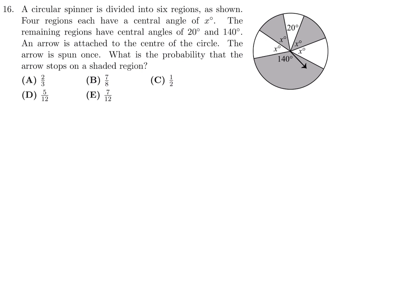A circular spinner is divided into 6 regions as shown. 4 regions each have a central angle of X degrees. The remaining regions have central angles of 20 and 140 degrees. An arrow is attached to the center of the circle. The arrow is spun once. What is the probability that the arrow stops on the shaded region? We have 4X plus 20 plus 140. And the sum of all those angles all the way around is 360. So 4X is going to be 360 minus 160, so 200. And therefore, X is going to be 50.